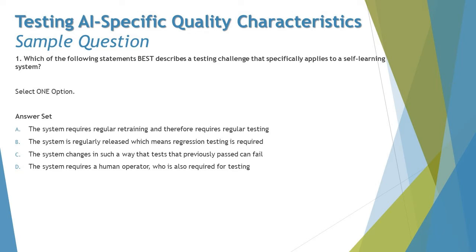Option C says: the system changes in such a way that tests that previously passed can now fail. Yes, that's a valid challenge — because it's a self-learning system, it keeps changing itself, and after some time, tests that earlier passed may now fail. This is one of the key challenges of self-learning systems.